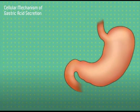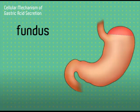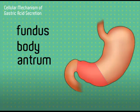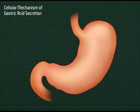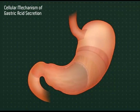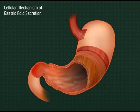The stomach is anatomically divided into three parts: the fundus, the body, and the antrum. The fundus and the body, with their thin walls, both act as a reservoir, while the antrum, which has thicker walls, aids in digestion and gastric emptying.